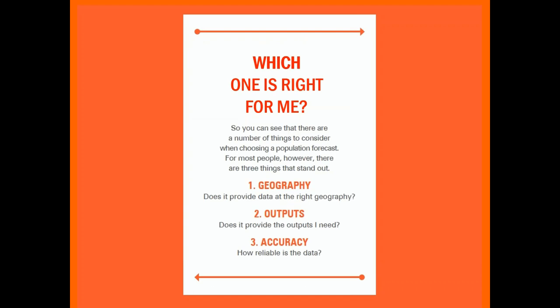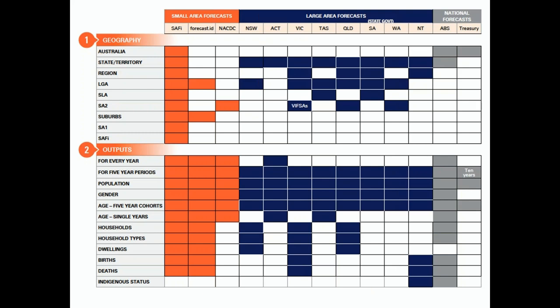So which one is right for me? As you can see there are quite a number of things to consider, so we've put a table together with the key ones - forecast providers across the top and the geography and outputs down the side. Let's work through an example. We have a client who is an aged care provider operating in Victoria, Tasmania, South Australia and New South Wales, and they're looking to expand into Queensland. They need forecasts in Queensland for people aged 65 plus for each suburb across the state so they can identify the best investment opportunities. We recommended that they use the Queensland state government forecasts because they provide statewide coverage by SA2, which is close enough to suburb, with forecasts every five years, and we can use five year age groups to build up our required 65 plus cohort.